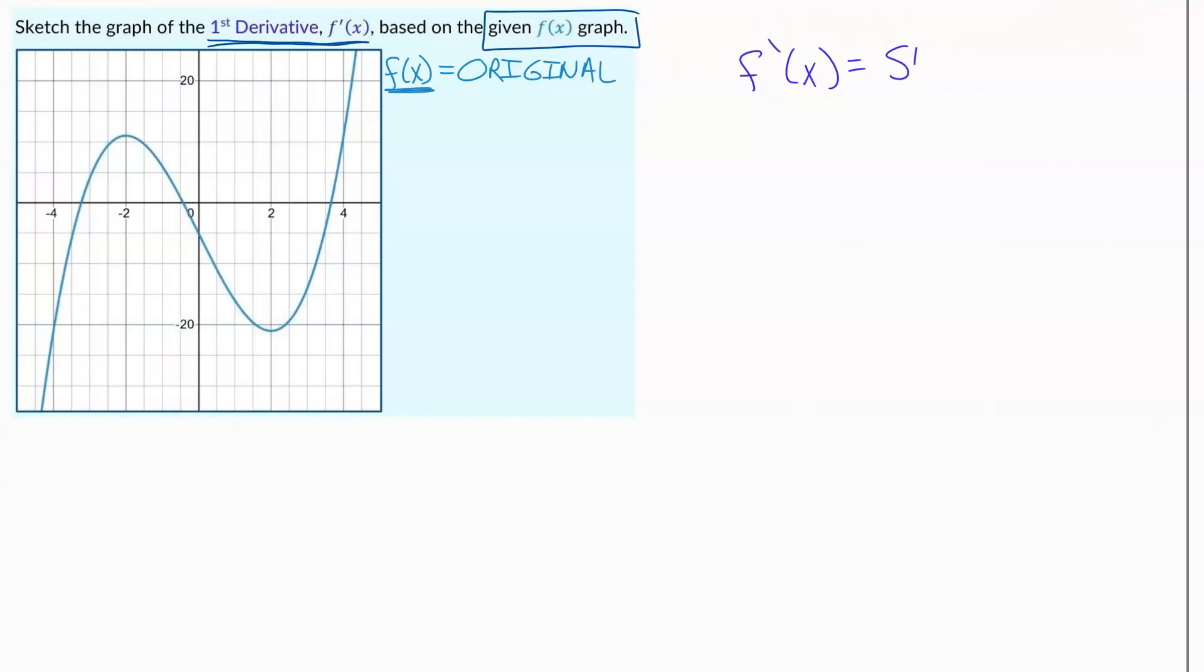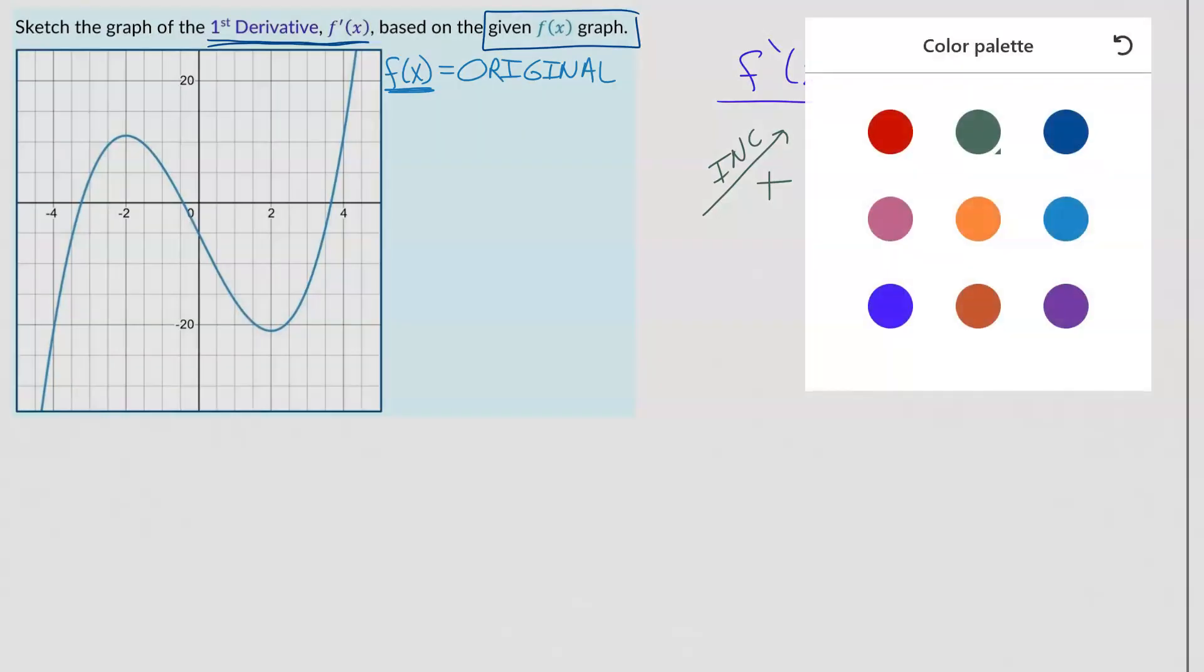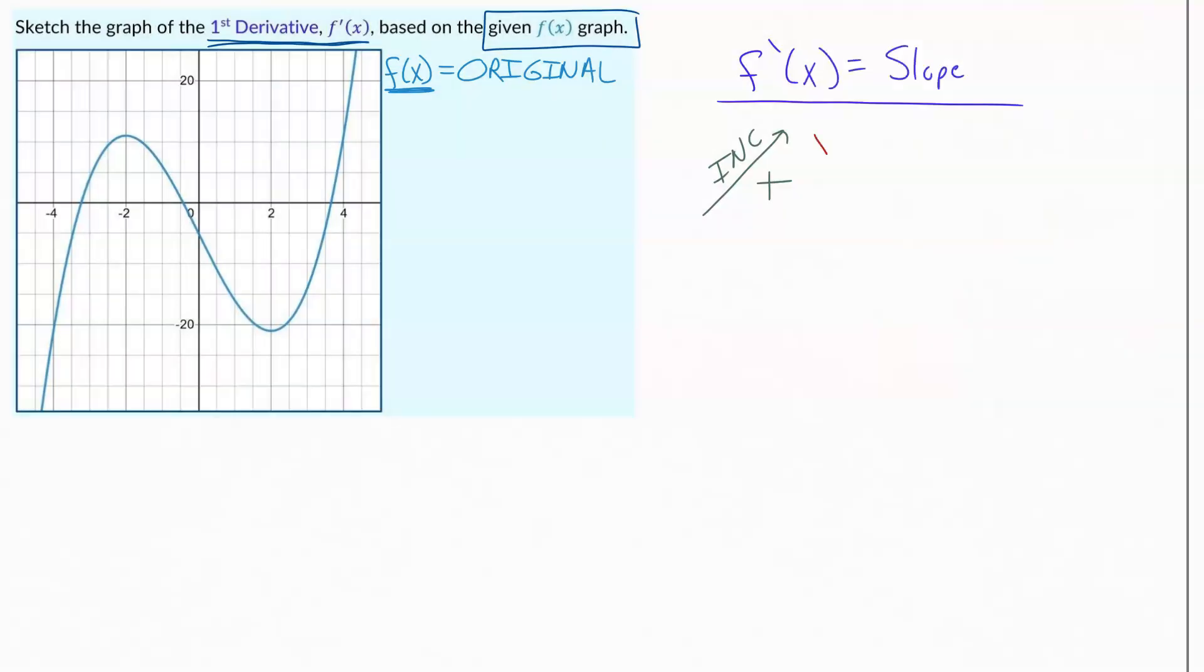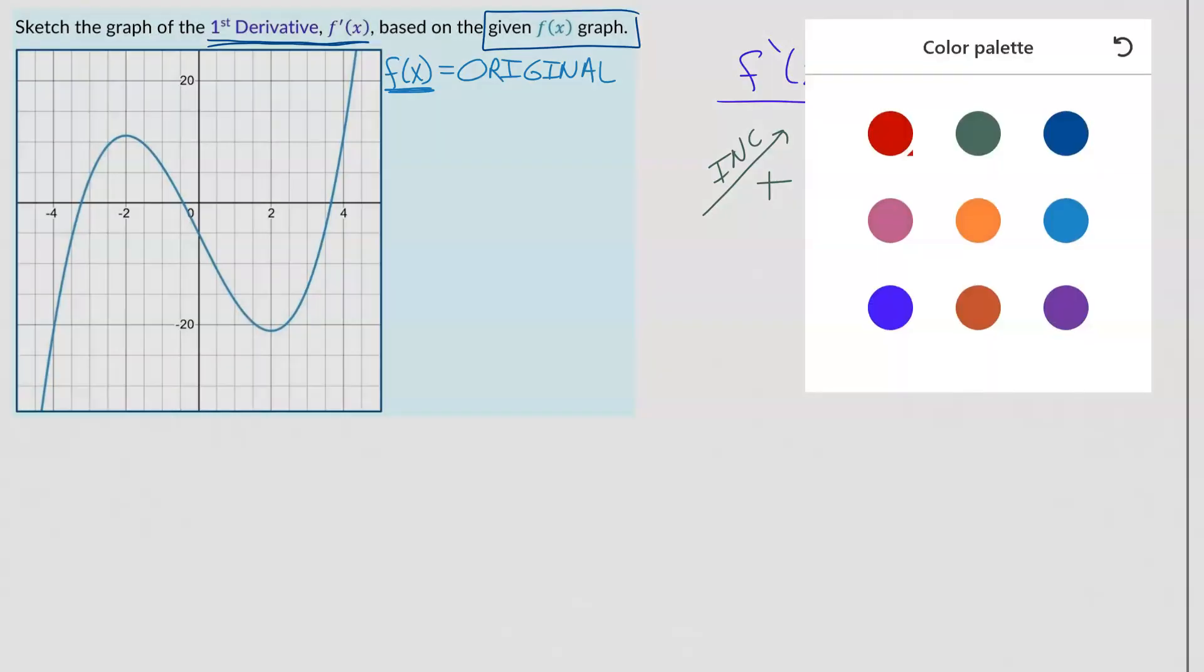The derivative is all about the slope of the graph. Remember, derivatives are slopes. So if my graph is headed up and increasing, that's a positive slope and therefore a positive derivative. If my graph is headed down and decreasing, that's a negative slope and a negative derivative.